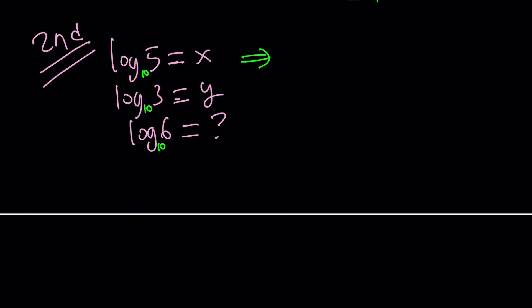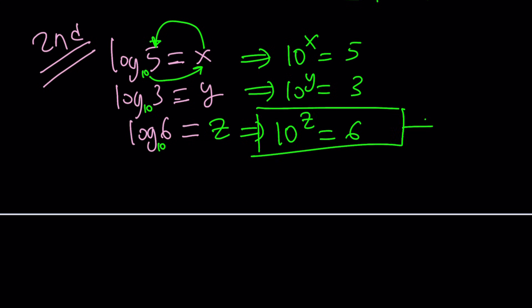By using definition of logs, this means 10 to the power, remember this is the base, that's the exponent, and this is the result, is equal to 5. From here, 10 to the y is equal to 3, so I kind of need to find 10 to the power of something equals 6. We don't know what the third one is. Let's go ahead and set it equal to z. Because x, y, z. Now we want to find the z that satisfies this equation. What is the z? That's what we're looking for. Don't lose sight of that.